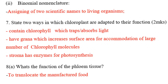State two ways in which chloroplasts are adapted to their functions. Number one: they contain chlorophyll which traps light. Number two: they have grana which increase surface area for accommodation of a large number of chlorophyll molecules.